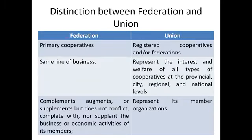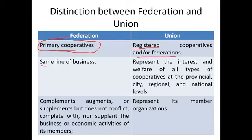To repeat: in a Federation, the members are primary cooperatives — meaning natural persons. In a Union, the members are registered cooperatives and/or federations. In a Federation, they must be in the same line of business; in a Union, it represents all types of cooperatives at the provincial, city, regional, and national levels. A Federation complements its members, while a Union represents its members' organization.